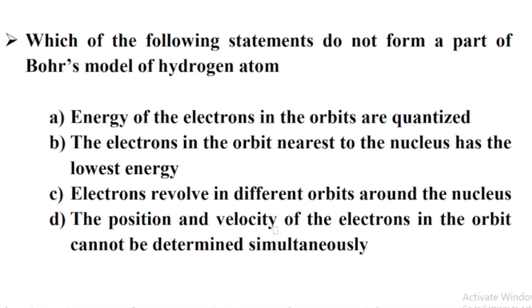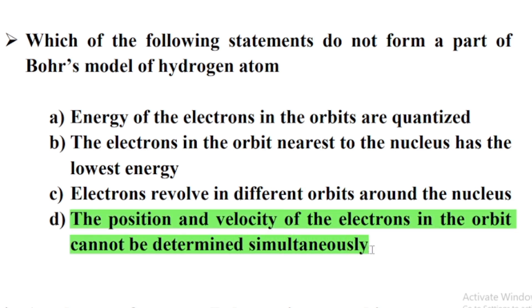Which of the following statements does not form a part of Bohr's model of hydrogen atom? Option D: The position and the velocity of electrons in the orbit cannot be determined simultaneously.